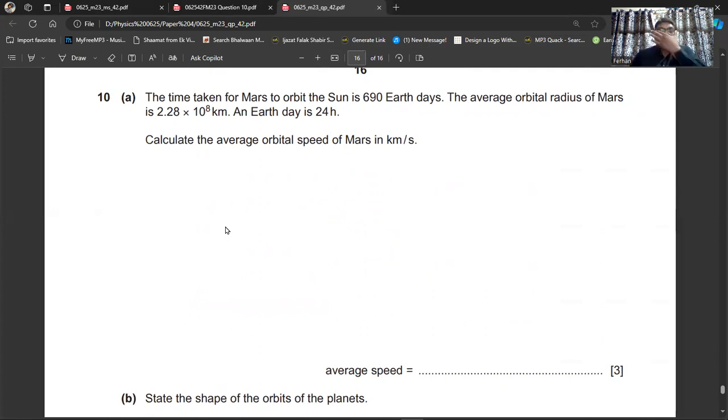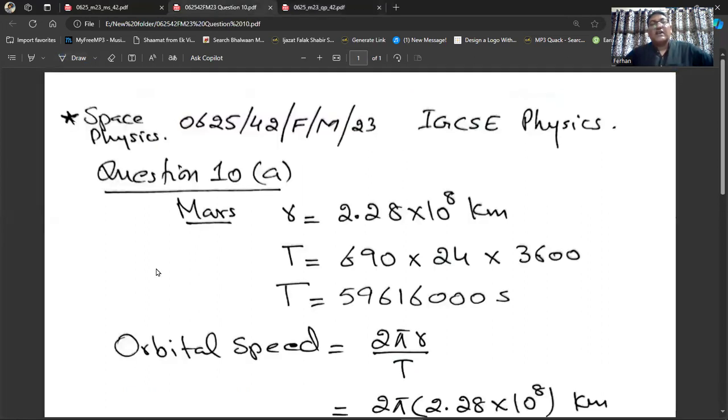The time must be taken in seconds. If you want to find out the average orbital speed, the formula is 2πr divided by T. R here is the radius and that is 2.28 times 10^8 kilometers. T is the time, and because you want the average speed to be in kilometers per second, the time must be taken in seconds. The T here is the orbital period. The orbital period of Mars is given, that is 690 Earth days. But we want the time in seconds, so I will convert this into seconds.